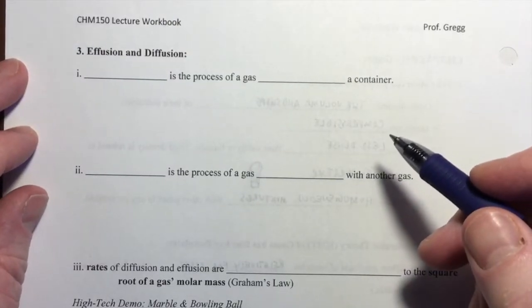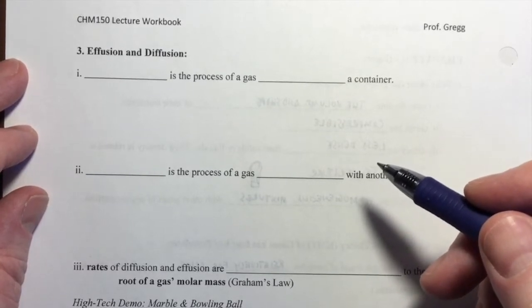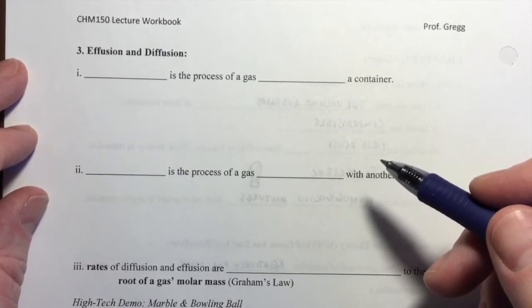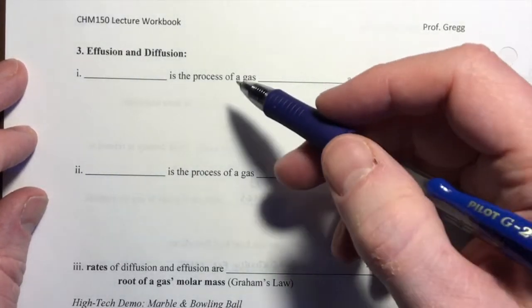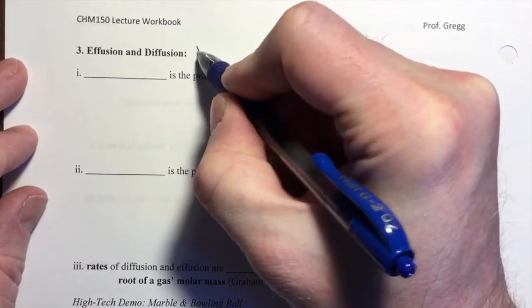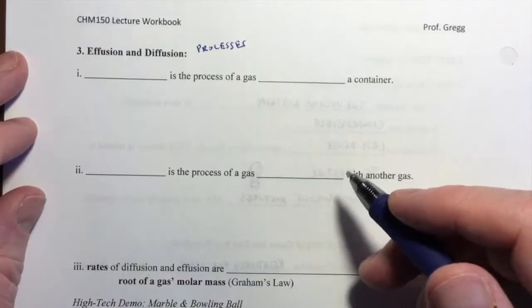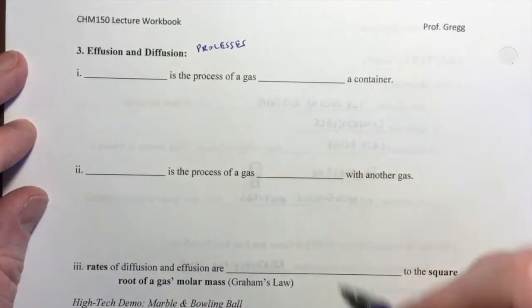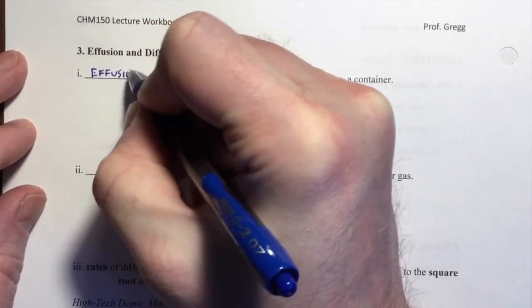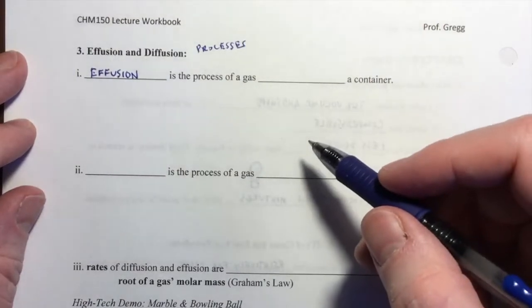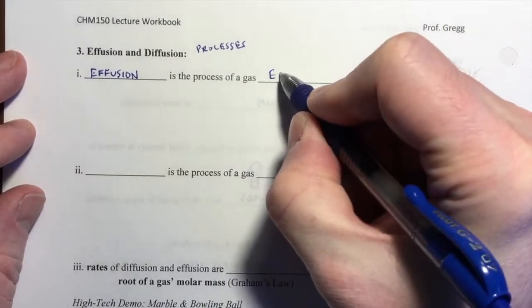The observable properties of a gas and the postulates of the theory explaining what a gas is made of and how it's composed lead us to a couple of processes now. Effusion and diffusion are processes. The first is effusion, and effusion is the word that we use to describe the process of a gas escaping a container.